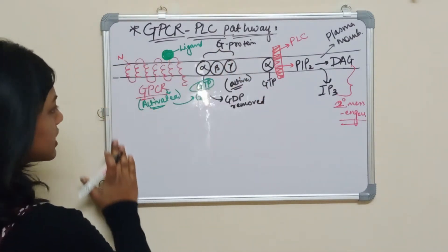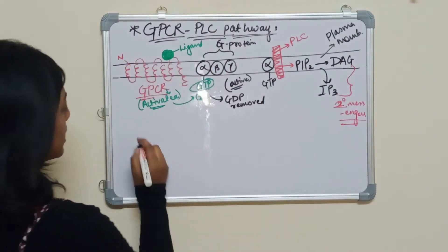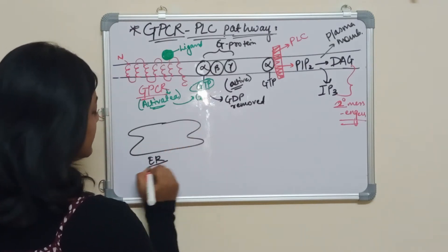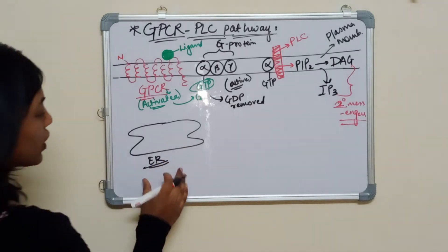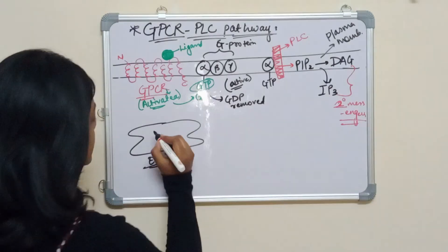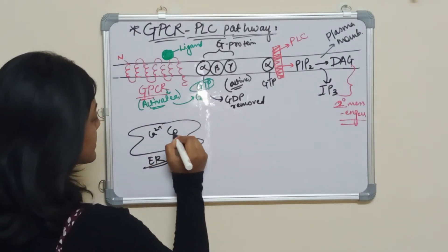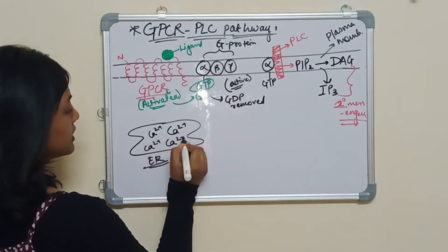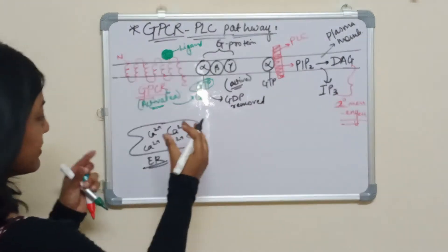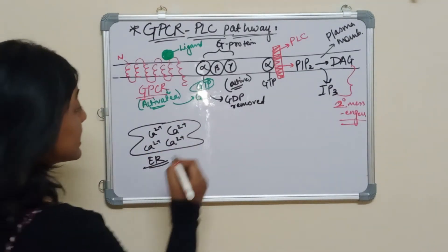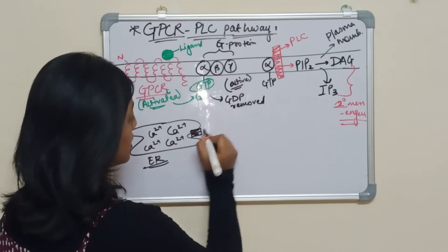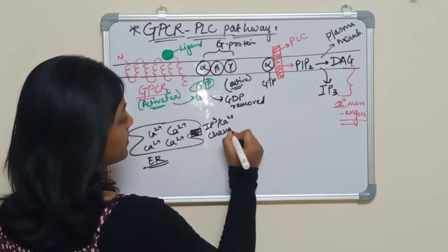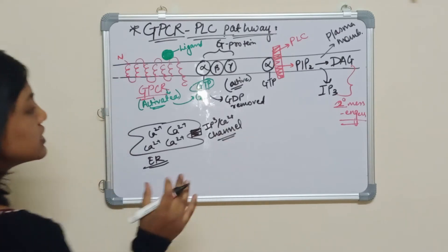Inside the cell is the ER — endoplasmic reticulum. The endoplasmic reticulum is rich in calcium ions, but they are trapped inside the ER. The ER also has a channel called the IP3 calcium channel.